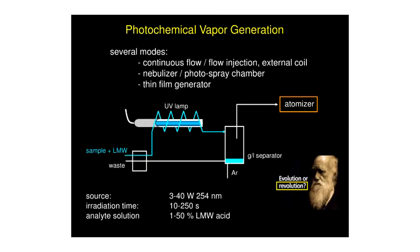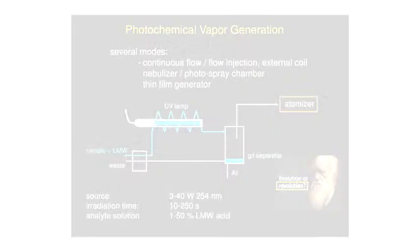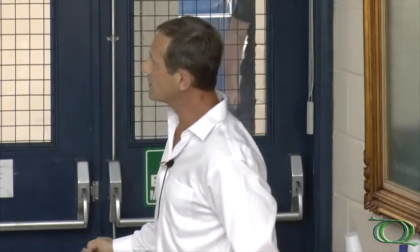We introduce a sample containing a low molecular weight organic acid such as acetic, formic, or propionic acid, and we expose the solution of the sample and the low molecular weight acid to an ultraviolet field from a simple UV lamp. The solution is then gas-passed to a conventional gas-liquid separator, as used for chemical vapor generation, and then the volatile species transfer to the atomizer.